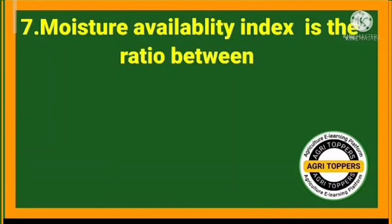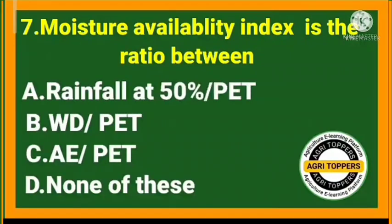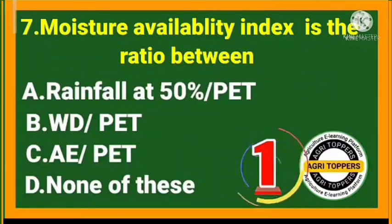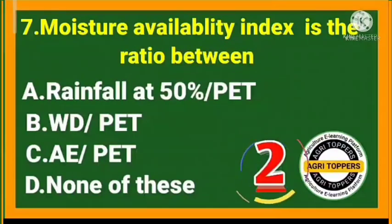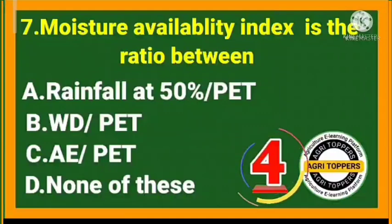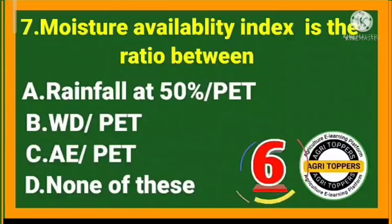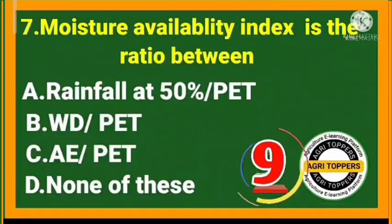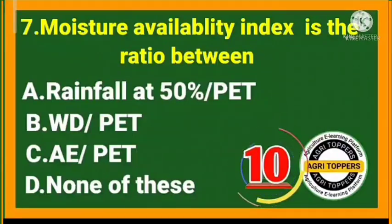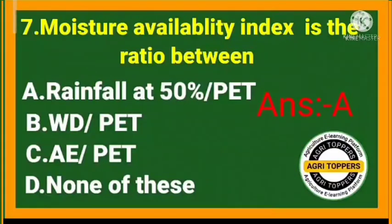Seventh question: moisture availability index is the ratio between rainfall at 50 percent and PET.